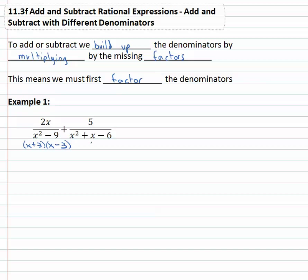For the second denominator, factoring it: x² is x times x, we want to multiply to negative 6 with different signs and add to 1x. With different signs, using 2 and 3 — if the 3 is positive and the 2 is negative, that works. So now that we've factored those denominators, the least common denominator uses all factors with highest exponents: x plus 3, x minus 3, and x minus 2. We already have x plus 3, so we don't repeat it.